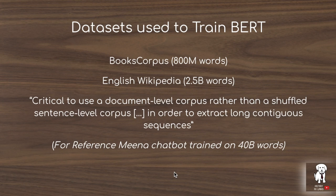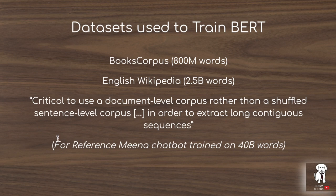BERT is pre-trained on two tasks simultaneously: next sentence prediction and masked token prediction. The datasets used are 800 million words from the Books Corpus and 2.6 billion words from English Wikipedia. A document-level corpus is used so that labels for the next sentence prediction self-supervised learning task can be easily extracted. For reference, the recently released Meena chatbot was trained on 40 billion words.